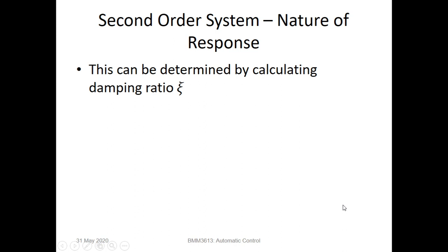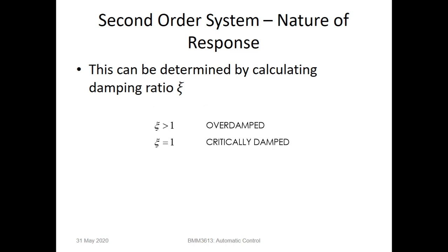We can determine the nature of the response of a second-order system by examining the damping ratio. If the damping ratio is greater than 1, the system is over-damped. If it equals 1, the system is critically damped. If the damping ratio is between 0 and 1, the system is under-damped. And if the damping ratio equals 0, the system is undamped.